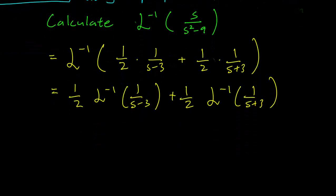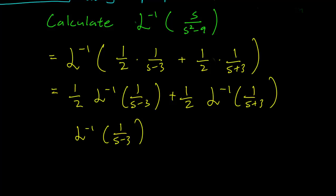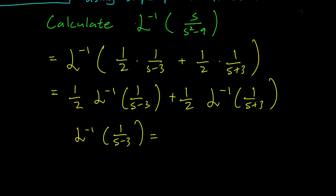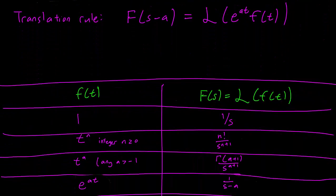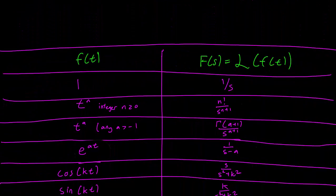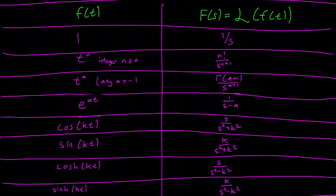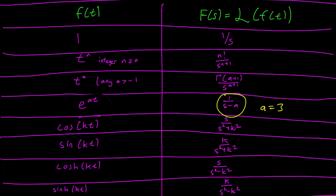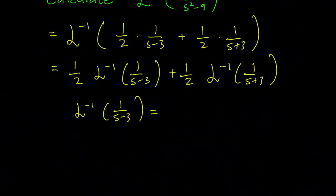First, let's figure out what the first one is. We're looking for the inverse Laplace transform of 1/(s minus 3). Consulting our table, the most similar term is the one with a equals 3, which gives us 1/(s minus 3) exactly. Setting a equals 3, this term is just going to be e^(3t).